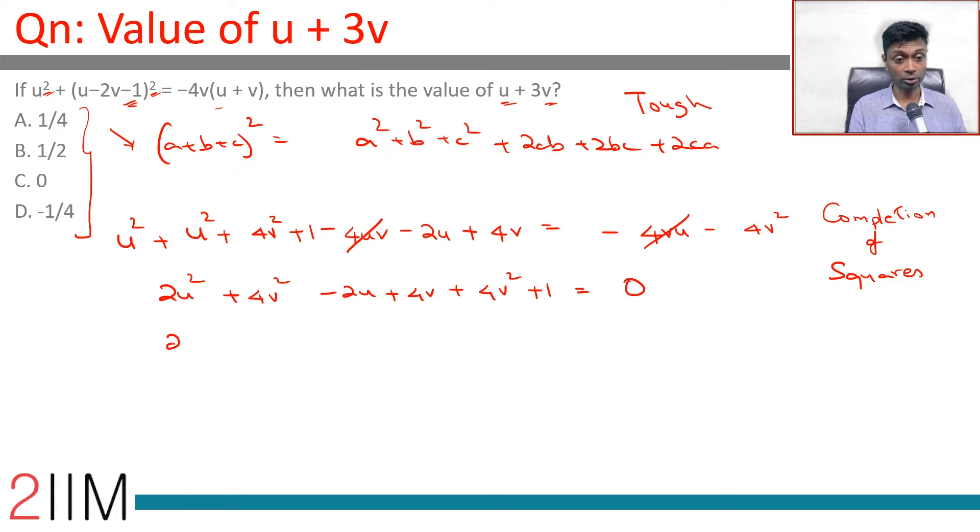Let us carve out the u together. It is 2u square minus 2u. Let us carve out the v together. 8v square plus 4v added together these add up to minus 1.